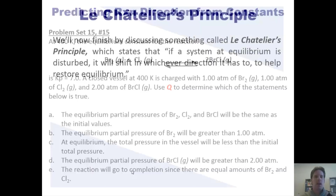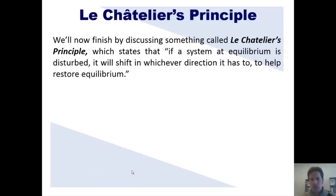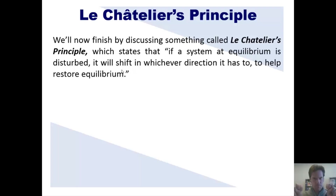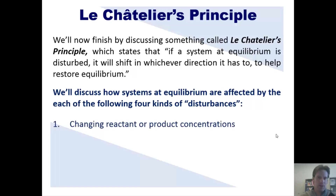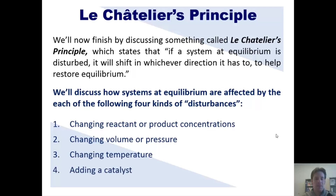I now want to turn to a different subject — Le Chatelier's Principle. Le Chatelier's Principle states: if a system at equilibrium is disturbed, it will shift in whichever direction it has to in order to restore equilibrium. Systems at equilibrium can be disturbed in four different ways: by changing the reactant or product concentrations, by changing the volume or pressure, by changing the temperature, and by adding a catalyst. We're now going to examine how each of these disturbs a reaction at equilibrium and how Le Chatelier's Principle allows the reaction to compensate.